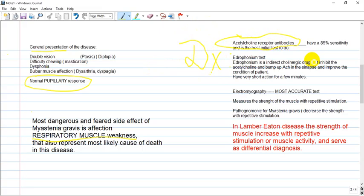General presentation includes double vision and muscle problems, from inability to close the eye to maintain the eyelid up. Also difficulty chewing, mastication, dysphonia, and bulbar muscle affection like dysarthria and dysphagia. However, pupillary response is normal and not affected.